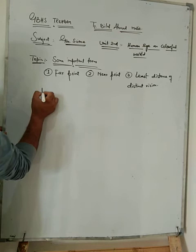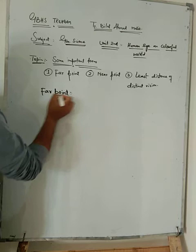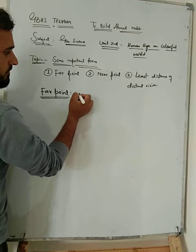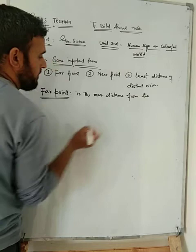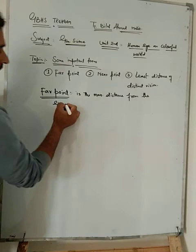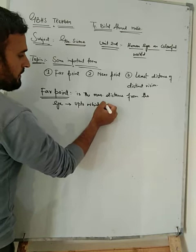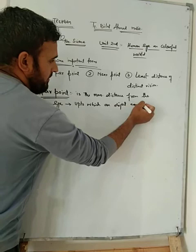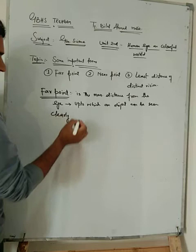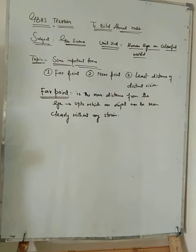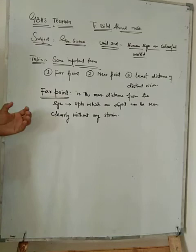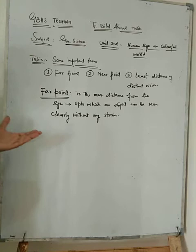So, far point is the maximum distance from the eye up to which an object can be seen clearly without any strain. Or how far the human eye can see any object clearly without any strain.